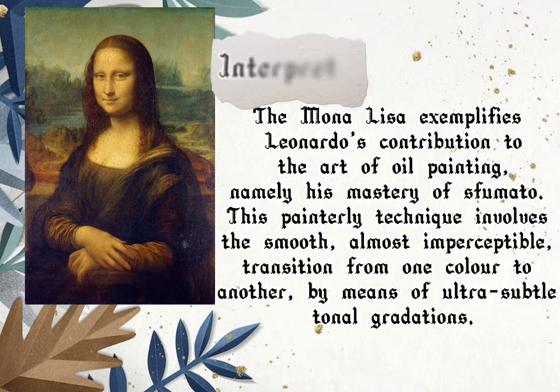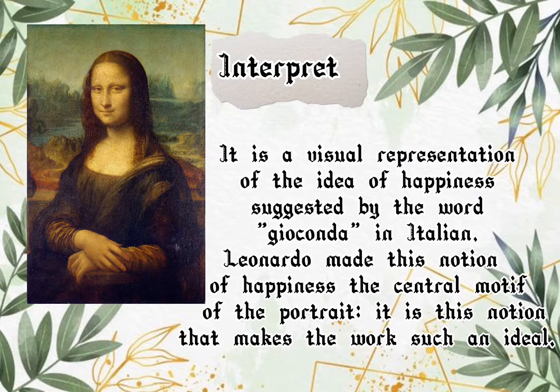It is a visual representation of the idea of happiness suggested by the word Gioconda. In Italian, Leonardo made this notion of happiness the central motif of the portrait. It is this notion that makes the work such an ideal.